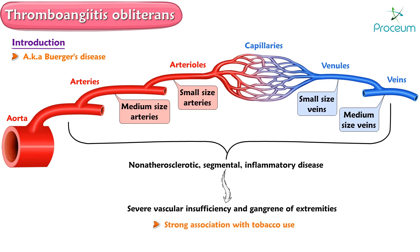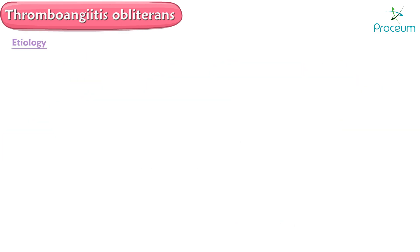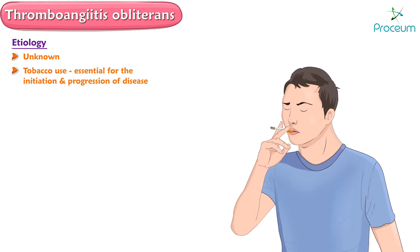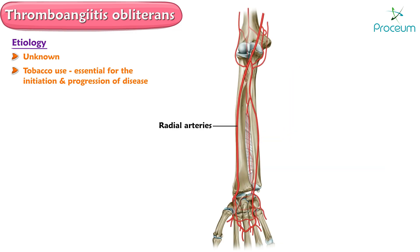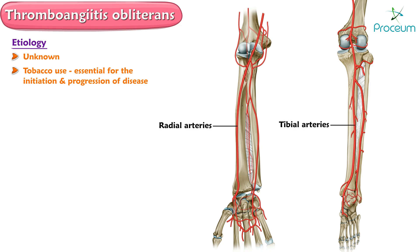The condition is strongly associated with tobacco use. The etiology is unknown, but the use of tobacco is essential for the initiation and progression of thromboangiitis obliterans. It is most commonly seen in the radial and tibial arteries, and is associated with HLA-B5 and HLA-A9.